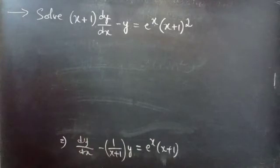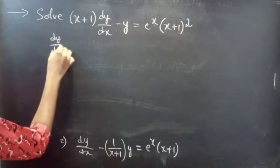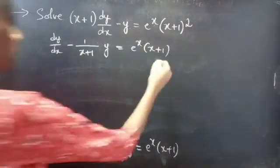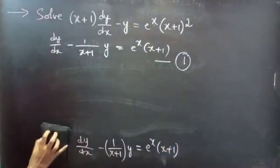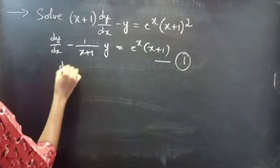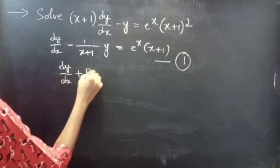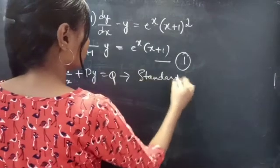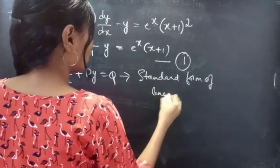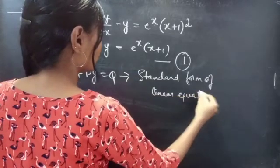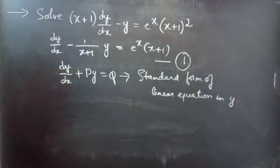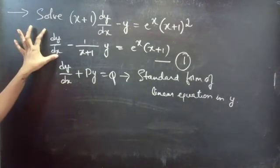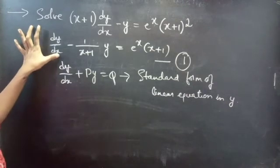We have dy/dx − 1/(x + 1) · y = e^x (x + 1). Consider this as equation 1. Now compare equation 1 with the standard form of a linear equation: dy/dx + P · y = Q. By comparing these two, we can say that equation 1 is in the standard form of a linear equation.